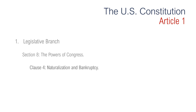Section 8, Clause 4 is regarding naturalization and bankruptcy. It says that only Congress may determine how aliens can become citizens of the United States. Congress may make laws with respect also to bankruptcy.